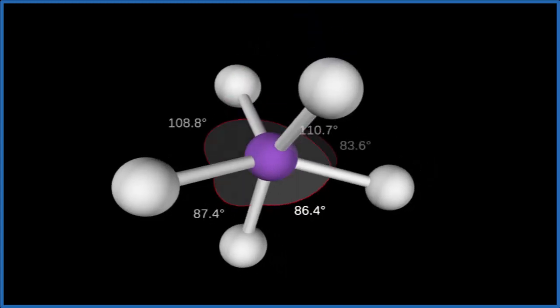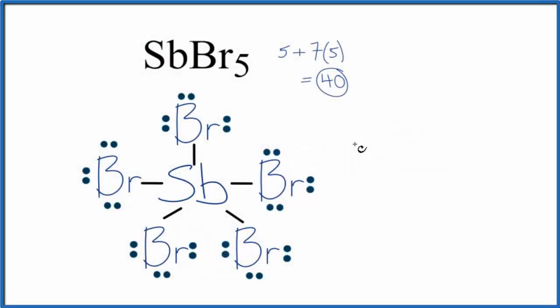Let's go back to our Lewis structure. We could also use the AXE notation to figure out the molecular geometry. A, that's the central atom. X, the number of atoms bonded to the central atom, those 5 bromines.